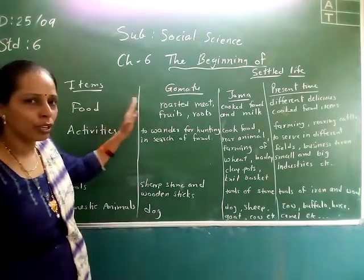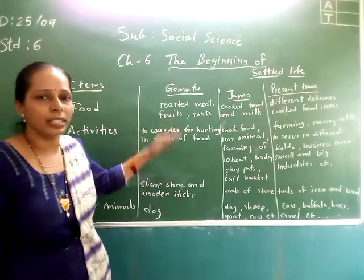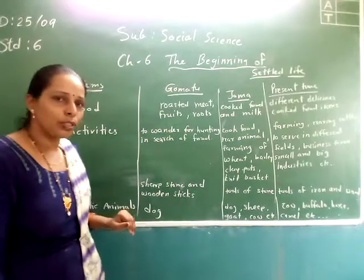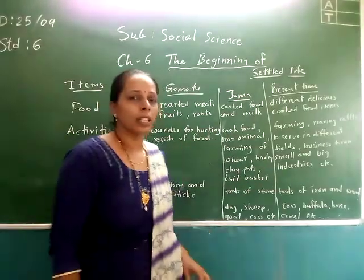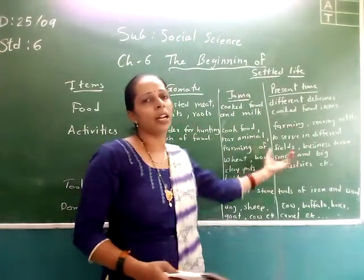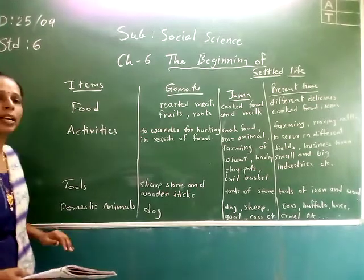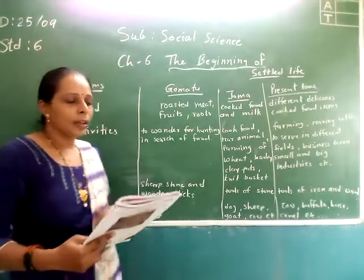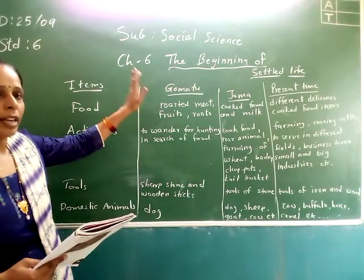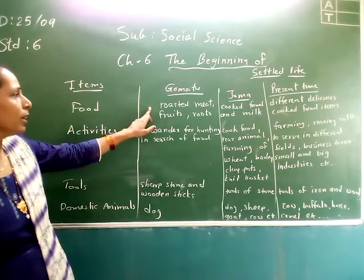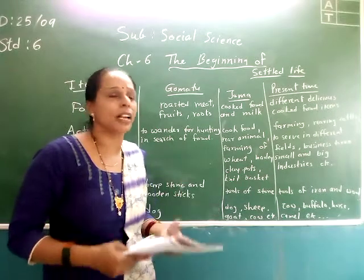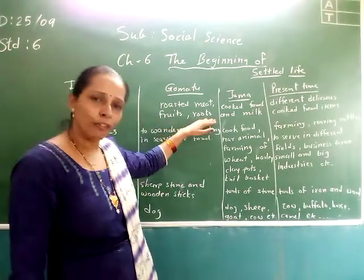In the time of Homo 2, which type of food they eat, which type of activities the people do, which type of tools they use — we have to list out all these things. In the time of Homo 2, they eat roasted meat. They would collect meat, cook it over fire, and also eat fruits and roots of plants.